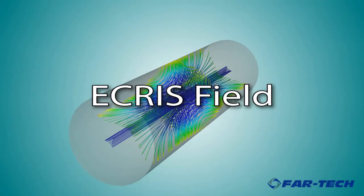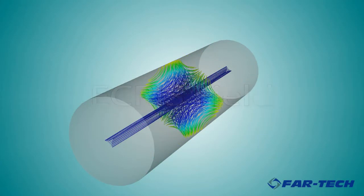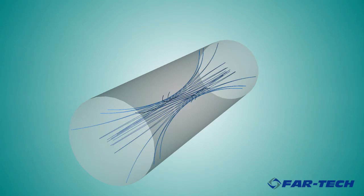By combining the hexapole field with the magnetic mirror field, we obtain the full complicated looking ECRIS field.